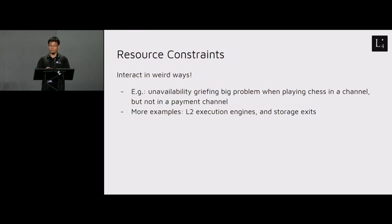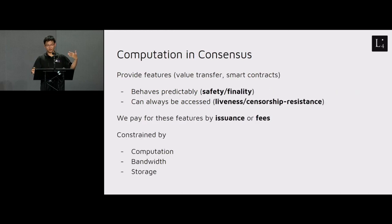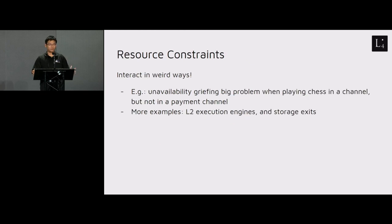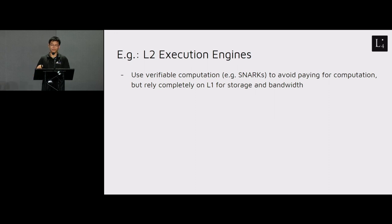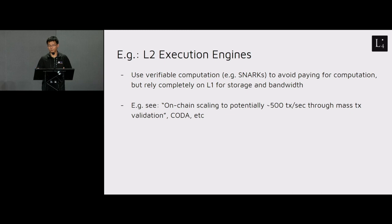Two things illustrate these resource constraints. First, Layer 2 execution engines: these use verifiable computation — where the cost to verify is much lower than the cost to perform the computation, as certain types of SNARKs achieve — to avoid paying for computation on-chain. They avoid making every validator redo the computation but rely completely on Layer 1 for storage and bandwidth.